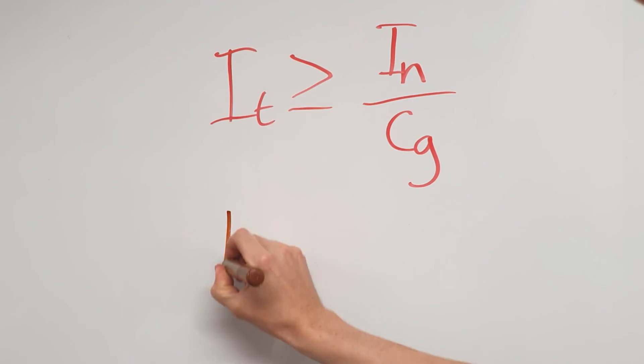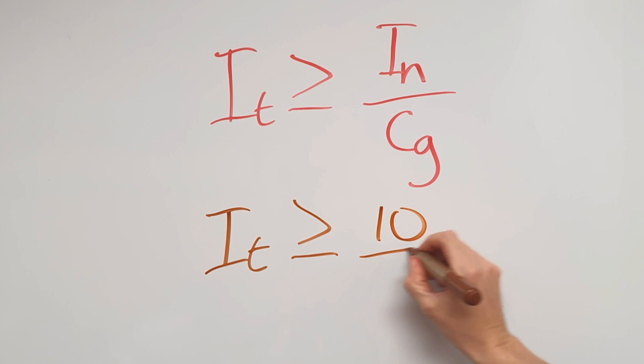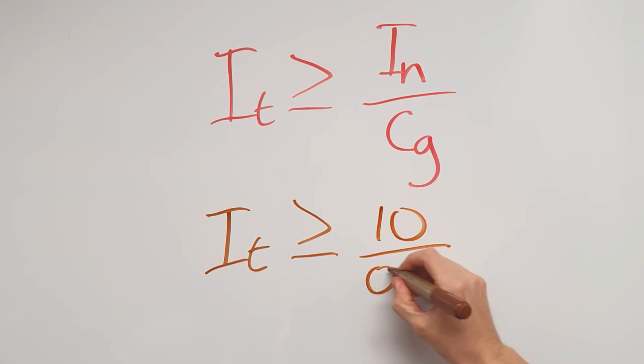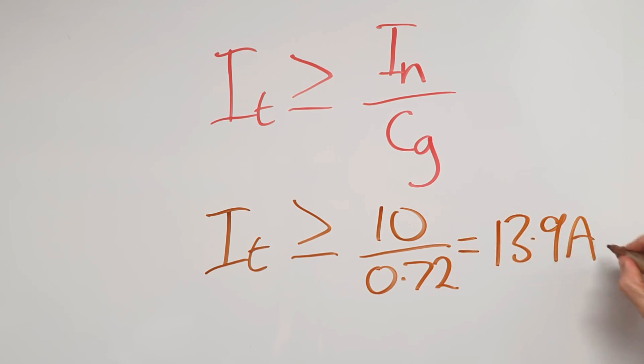There are a whole load of other rating factors that we can put under here to keep the grouping factor company, but we'll cover those in other videos. So if we're considering this lighting circuit protected by a 10 amp MCB, then the cable we install must be able to carry more than 10 divided by 0.72 — so 13.9 amps — and then we'd select the correct cable accordingly. But is that the end of the story?